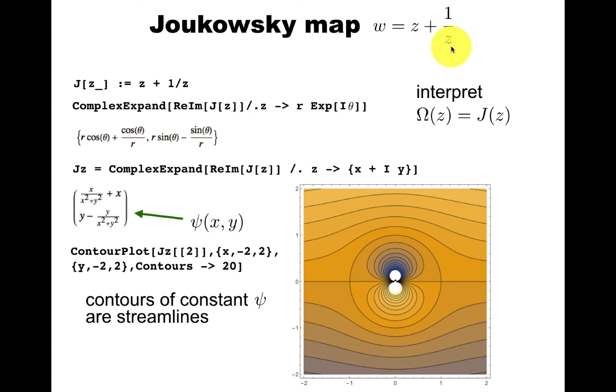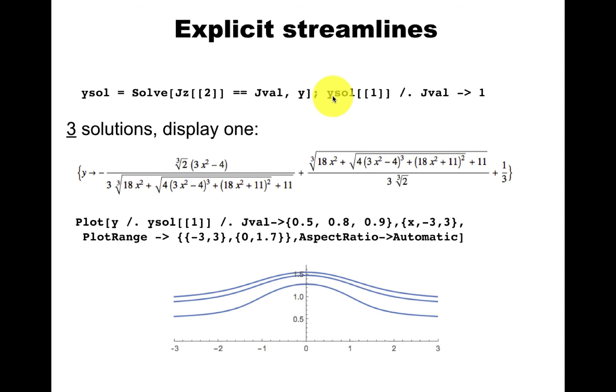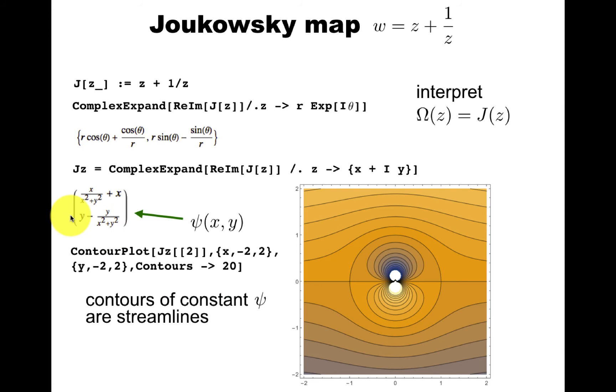So that was the implicit solution. Let's look at explicit solution. Let's set this imaginary part, the stream function, equal to some given constant j value. And if you solve it, for example, for j value 1, you get three solutions. Try to do this yourself and convince yourself you get three solutions for y.